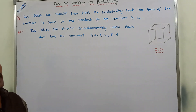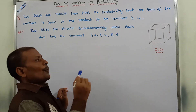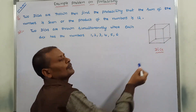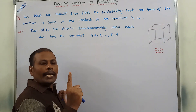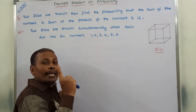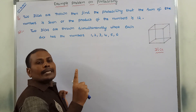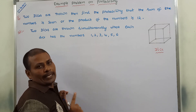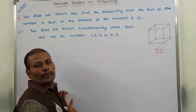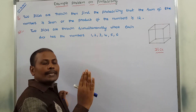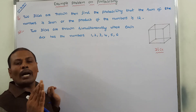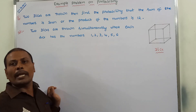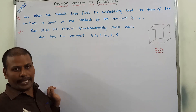Suppose we are taking one die. Each die has 6 faces. Those 6 faces have the numbers 1, 2, 3, 4, 5, and 6.